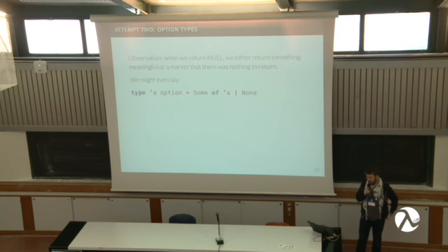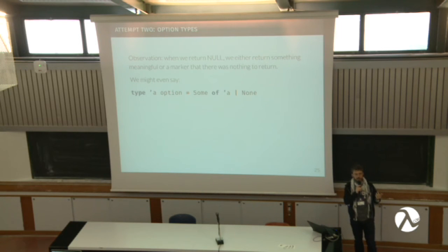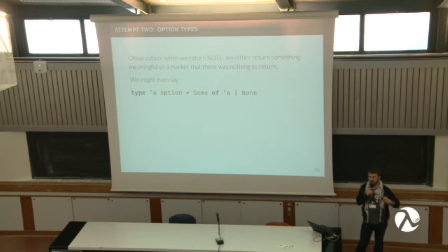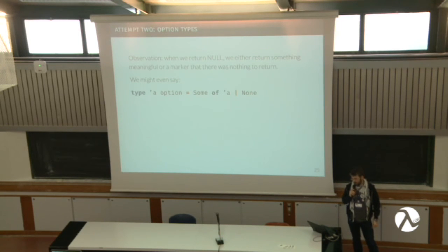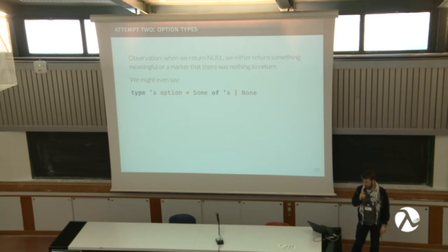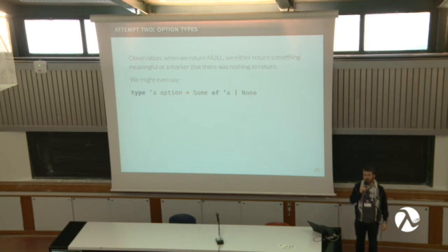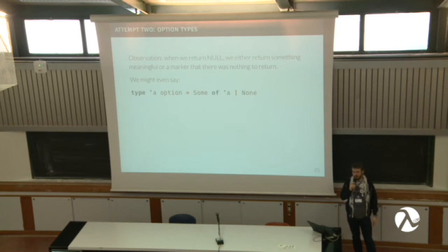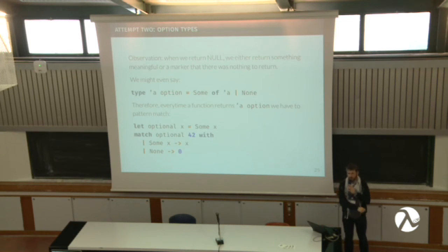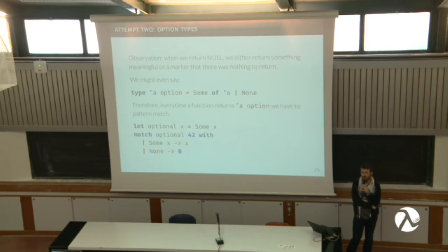Let's try a different way. Null is often used as a marker when a function returns a value that couldn't be computed. So let's use a type for this, and we call it option. Actually this type is already built into OCaml. The definition is: it's either some value — a result of the computation — or it's none, which means there was no value to be computed, for example if you tried to divide by zero. Every time a function returns an option type, we have to do pattern matching, which ensures we really handled the null case.